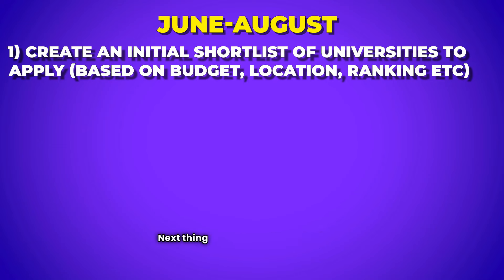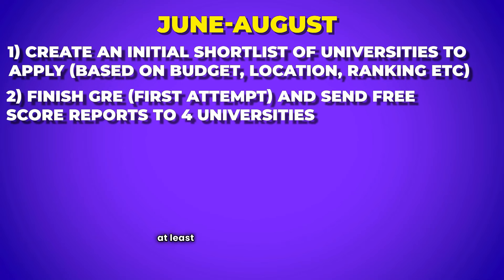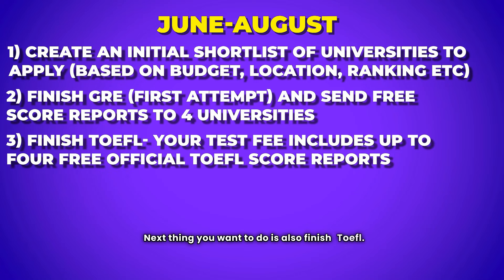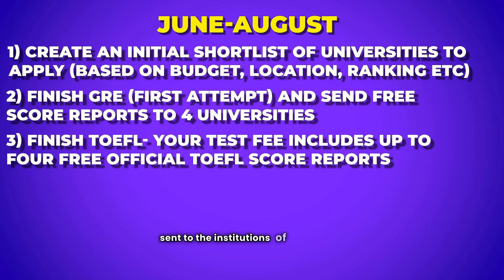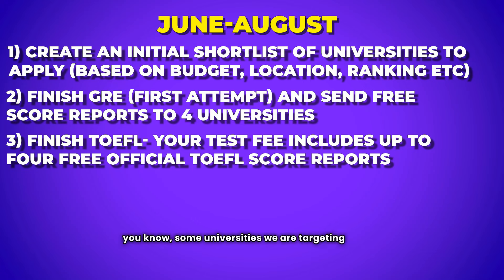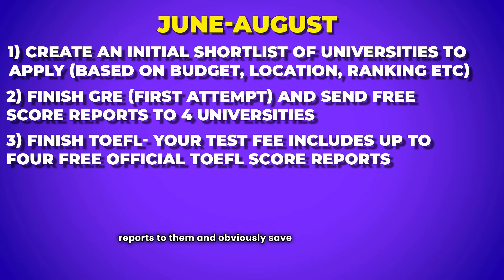Next, finish GRE — at least the first attempt — and send free score reports to four universities from your shortlist. Also finish TOEFL. Your test fee includes up to four free official TOEFL score reports to send to institutions of your choice; however, you can add or delete recipients through your ETS account until 10pm the day before your test. By shortlisting universities first, you'll have a good idea of where to send these free GRE and TOEFL reports, which obviously saves some money.